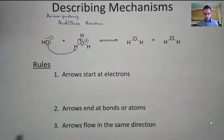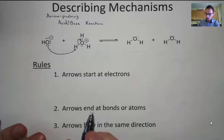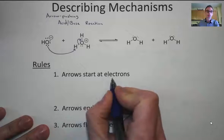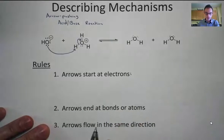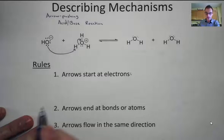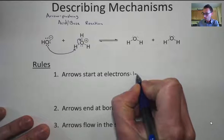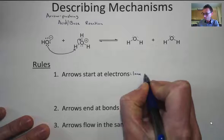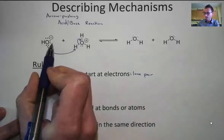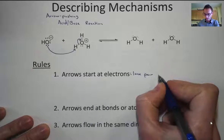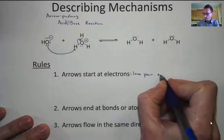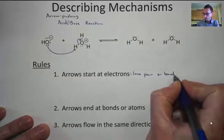There are a few rules we need to follow when doing arrow pushing. The first is that arrows are always going to start at electrons. There are only two places in organic chemistry where we think about electrons residing: the first is a lone pair — in this case, the lone pair on the oxygen in hydroxide — and the other place is a bond, with two electrons for every bond.